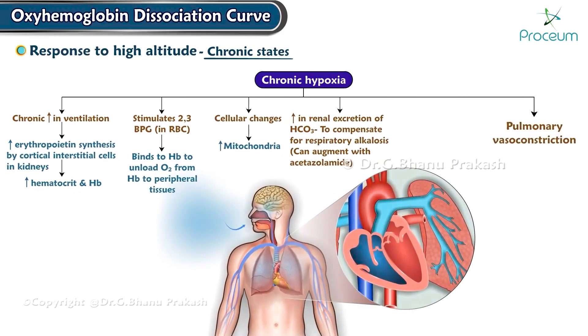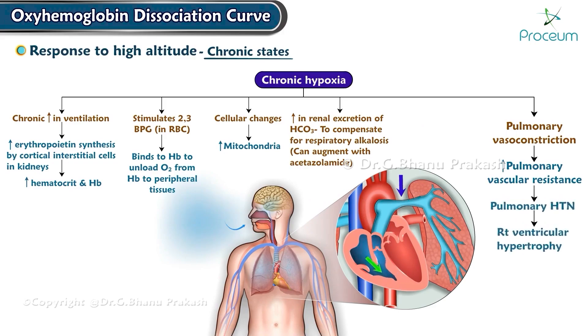Chronic hypoxia can lead to pulmonary vasoconstriction, which increases pulmonary vascular resistance, causes pulmonary hypertension, leading to right ventricular hypertrophy, and finally right heart failure.